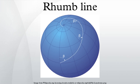See also: great circle, small circle, great ellipse, geodesics, geodesics on an ellipsoid, rhumb line network, iso-azimuthal.